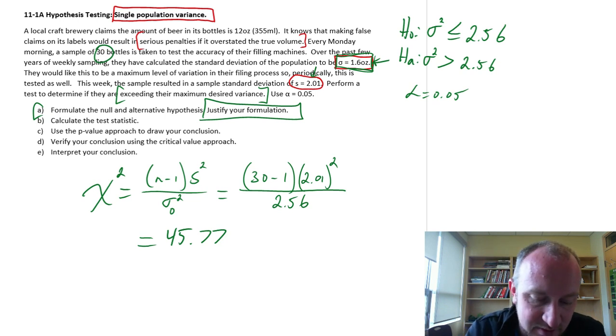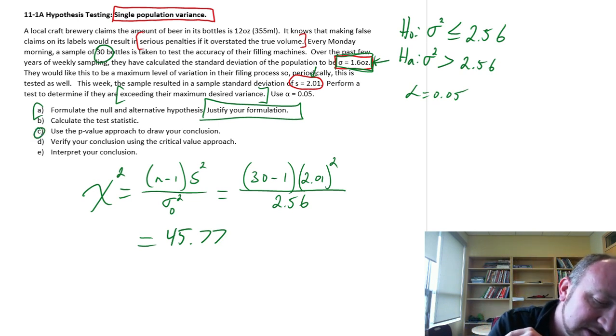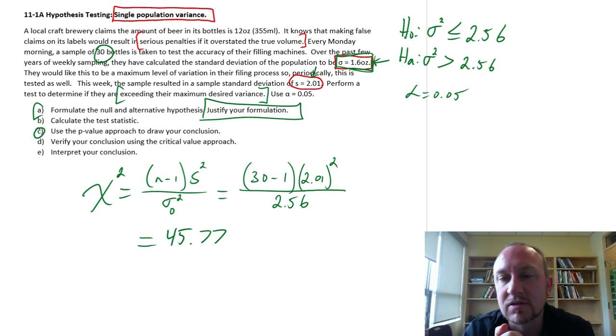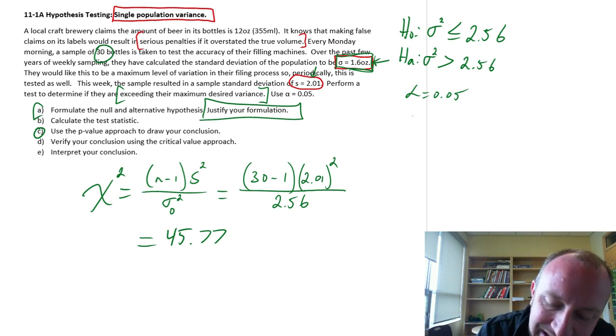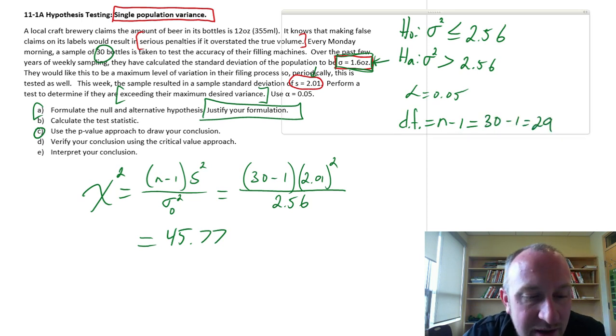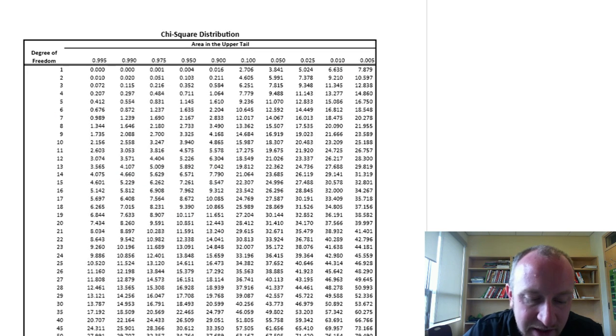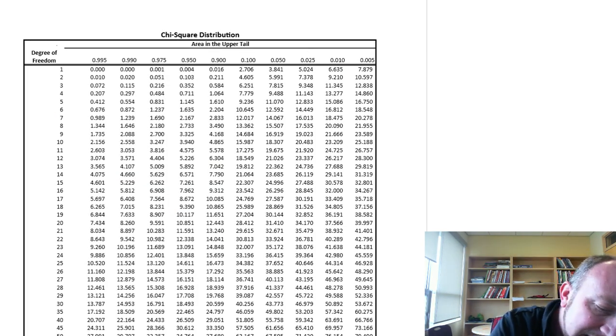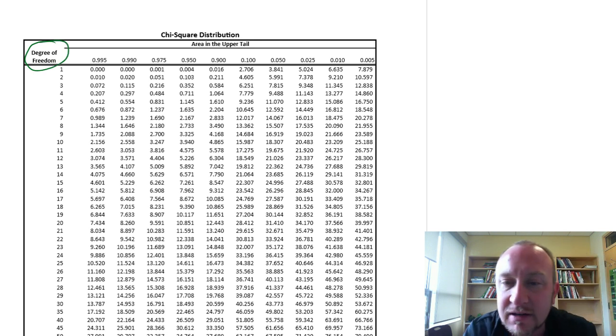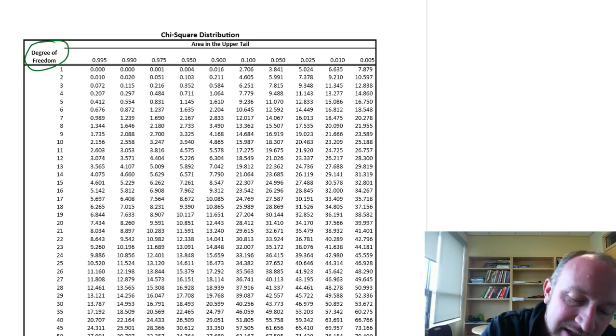Now what do we do with this? Okay, let's go and use our p-value approach to draw our conclusion. So similar to the t-distribution, we need to determine which variant of the chi-squared distribution is relevant. Degrees of freedom is n minus 1, which in this case is 30 minus 1, or 29. So I'll pull up my chi-squared table, looks something like this. Again, here's the degrees of freedom in that first column. This is providing us an area in the upper tail.